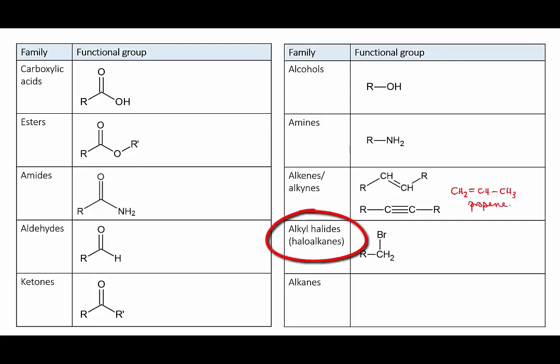The next family is the alkyl halides or the haloalkanes. These molecules are identical to alkanes except that one or more of the hydrogens in the molecule is replaced by a halogen atom. This could be fluorine, chlorine, bromine or iodine. The halogen atom constitutes the functional group. An example of one of these is bromopropane.